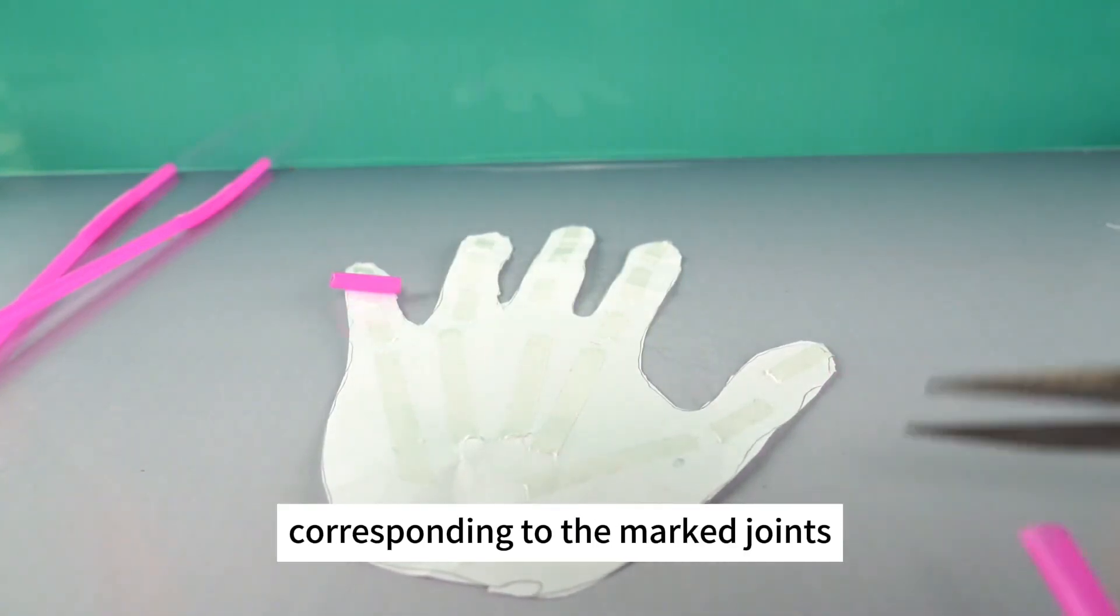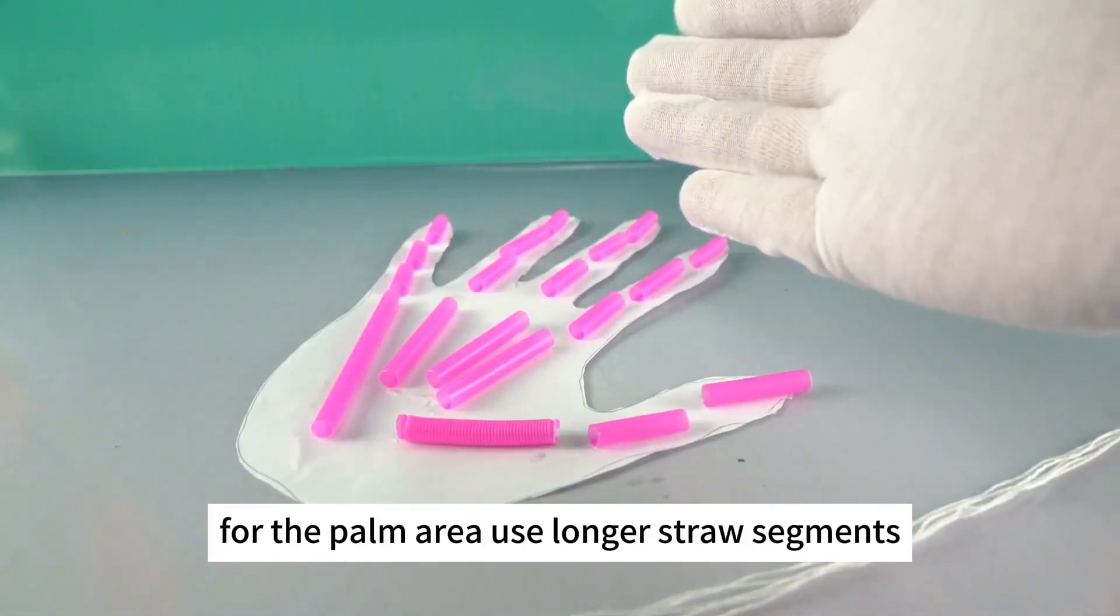Cut the straws into segments corresponding to the marked joints. For the palm area, use longer straw segments.